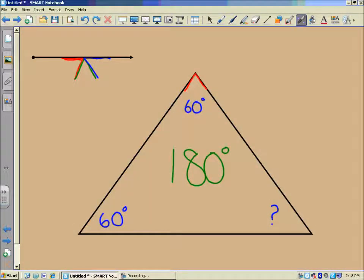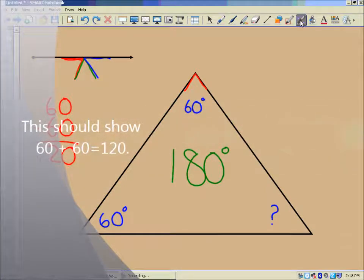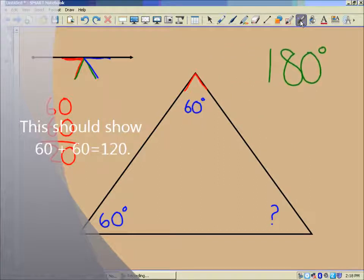Well, let's check that out. So if we have 60 and 60 as the known angles of this triangle, we added those up, we get 120 degrees. Now, if I took that 180, because every triangle measures three angles measure 180.